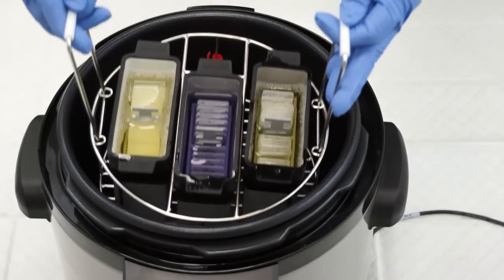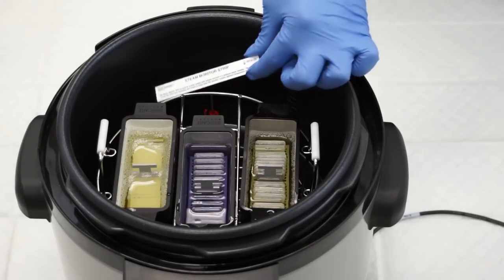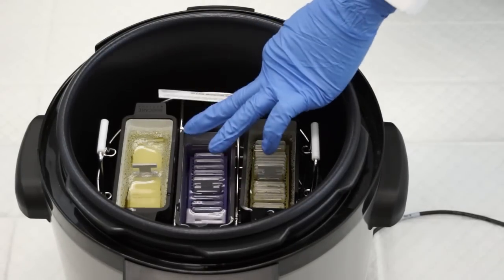A steam monitor strip placed inside the unit will turn dark gray or brownish black when exposed to temperatures over 100 degrees. When using a steam strip, carefully place it inside the unit, ensuring that it does not fall into the water.